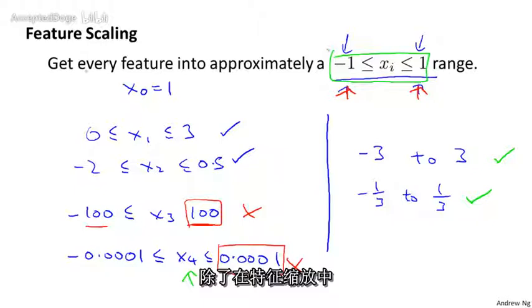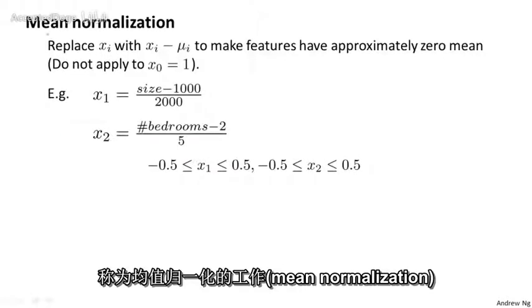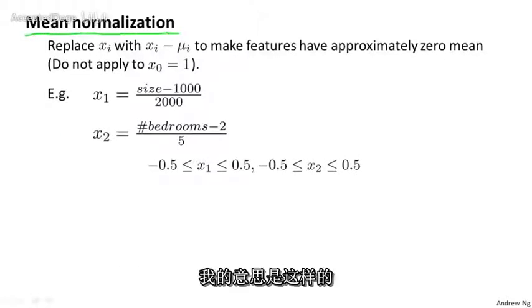In addition to dividing by the maximum value, when performing feature scaling, sometimes people will also do what's called mean normalization. And what I mean by that is that you might take a feature xi and replace it with xi - μi to make your features have approximately zero mean. And obviously we won't apply this to the feature x0, because x0 is always equal to 1, so it cannot have an average value of 0.